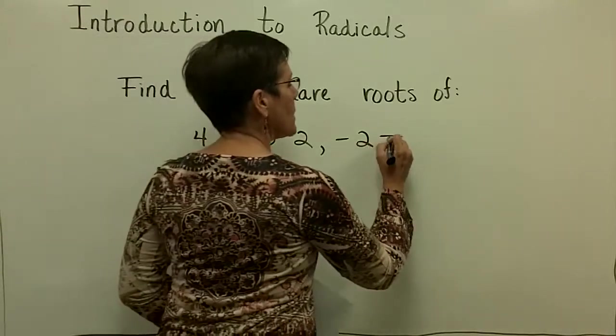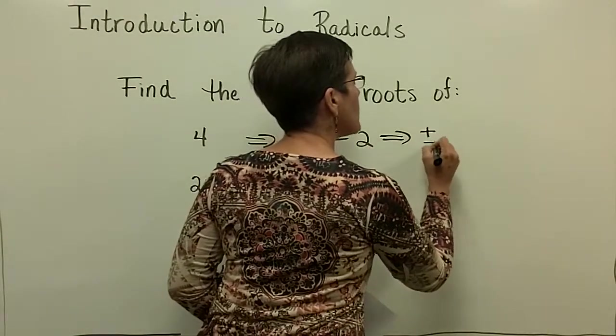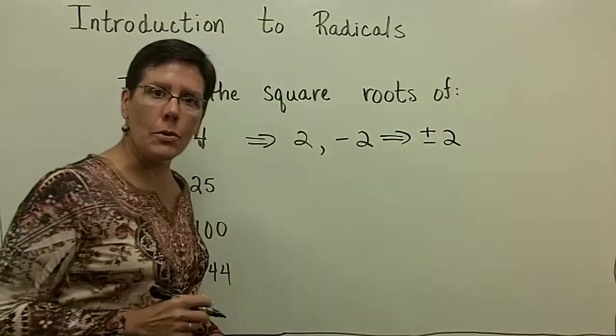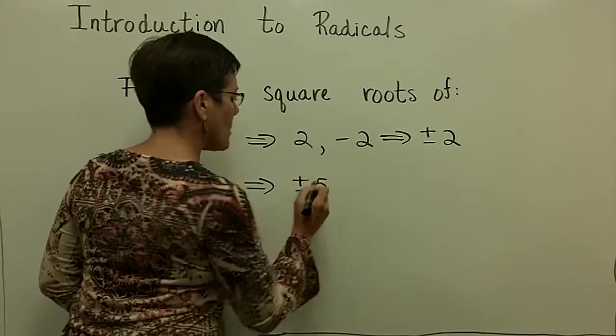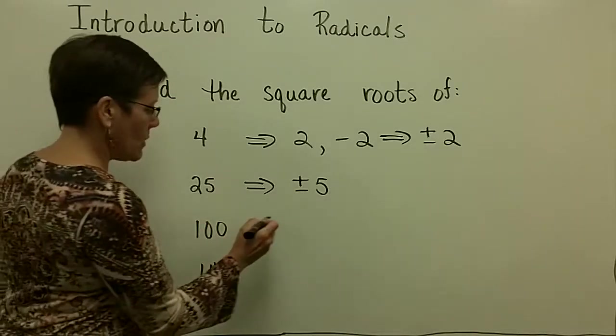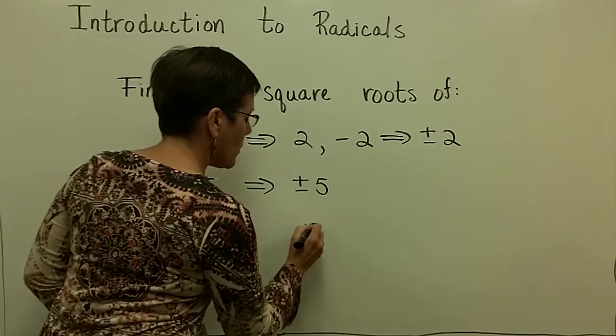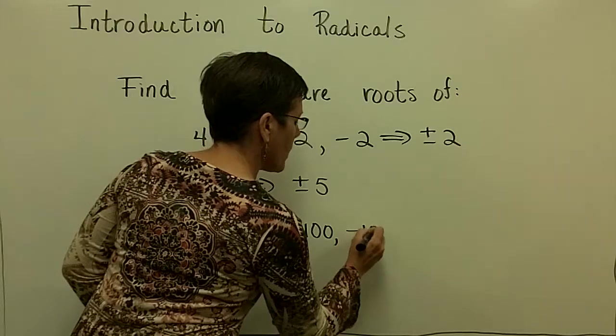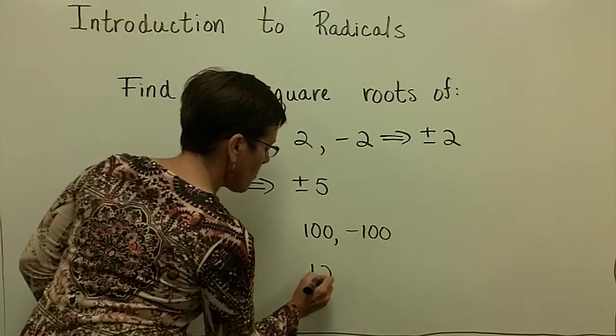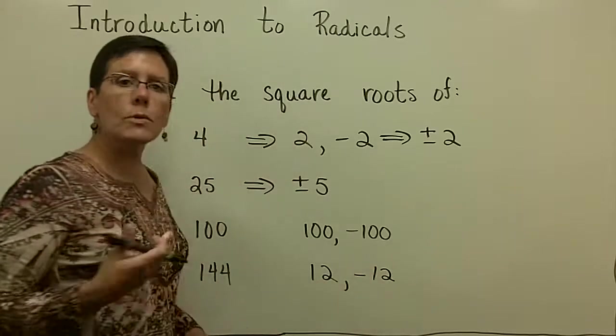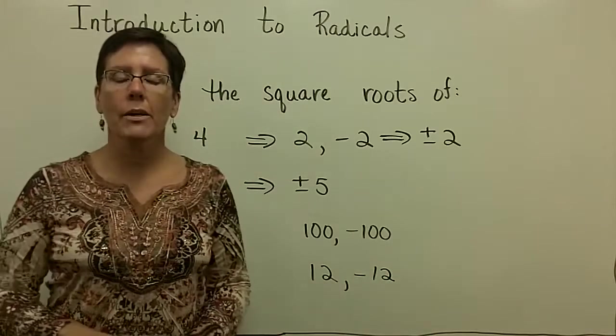Sometimes we write that as plus or minus 2. So the square root of 25, we might write as plus or minus 5. The square root of 100, positive 100 and negative 100. It doesn't really matter how you write it. 144, 12 and negative 12. Those are the square roots of these values.